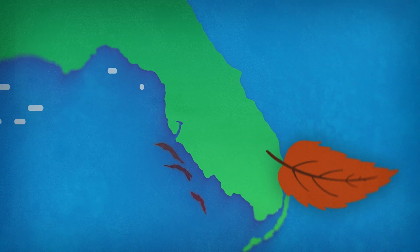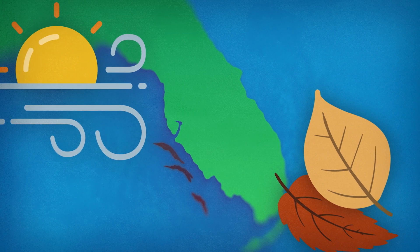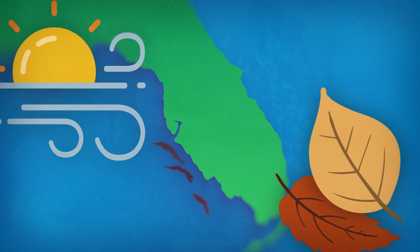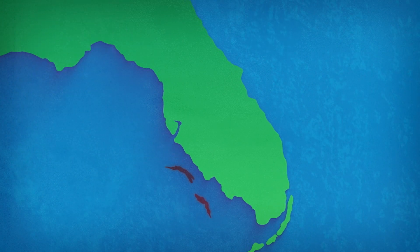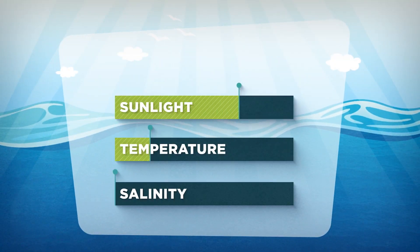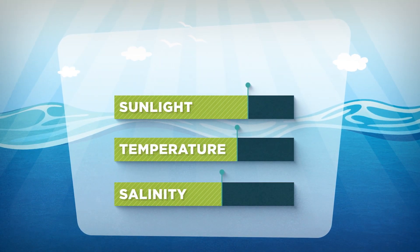Blooms typically start during summer or fall when winds and currents create conditions that concentrate populations of red tide cells as they are transported towards the coast. Sunlight, temperature, and salinity are important for growth.